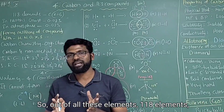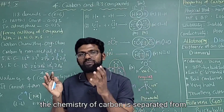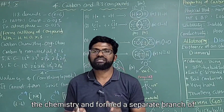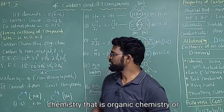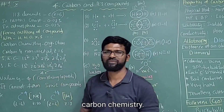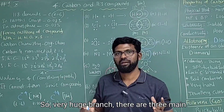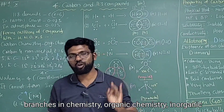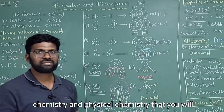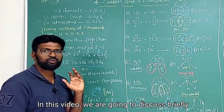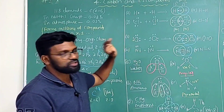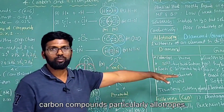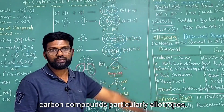Out of all 118 elements, the chemistry of carbon is separated and forms a separate branch of chemistry — that is organic chemistry, or carbon chemistry. There are three main branches in chemistry: organic chemistry, inorganic chemistry, and physical chemistry, which you will study in higher classes. In this video we are going to discuss briefly about covalent compounds, how covalent compounds are formed, some properties of carbon compounds, and particularly allotropes.